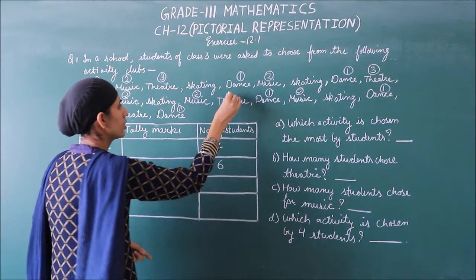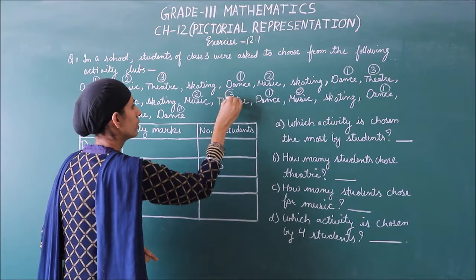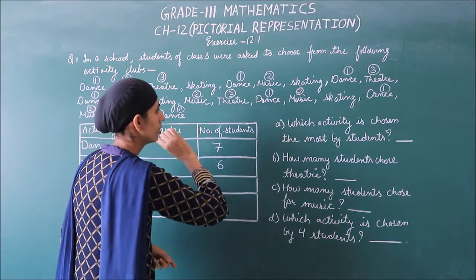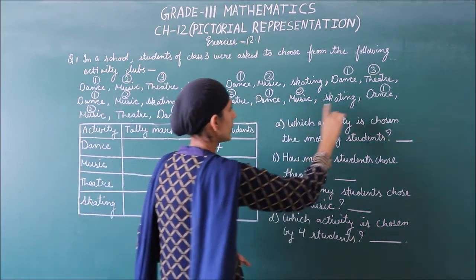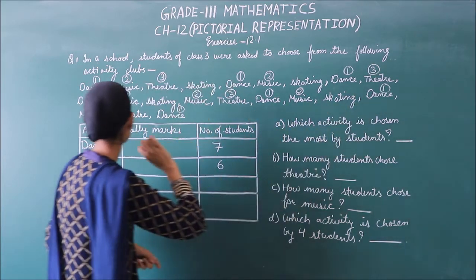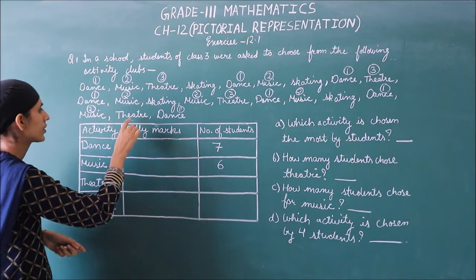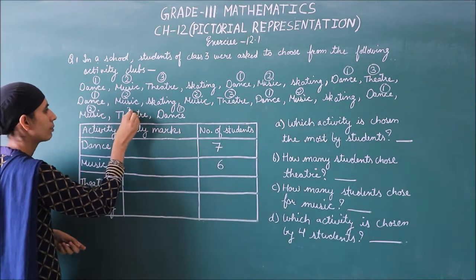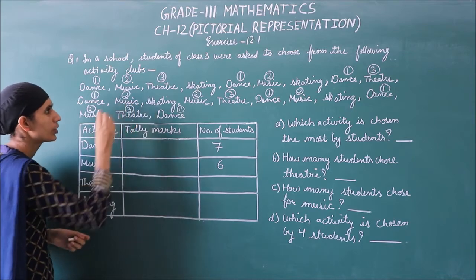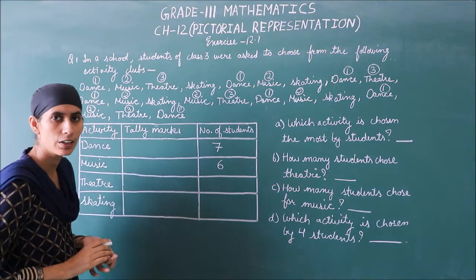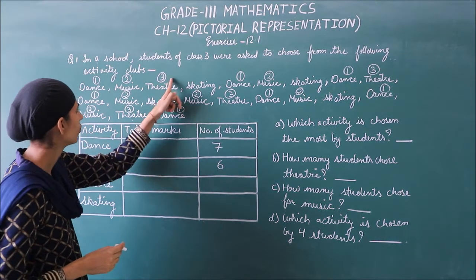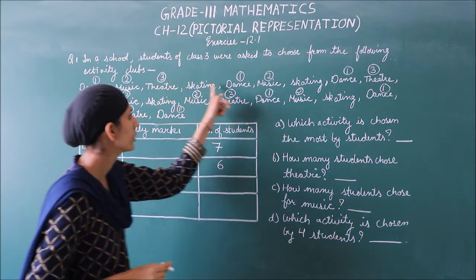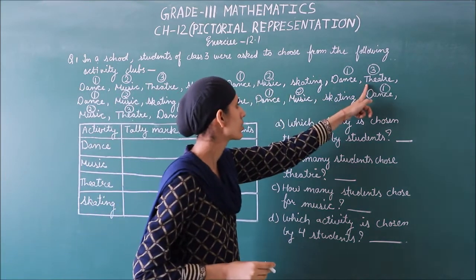Now using the same process we will count the remaining entries. In the last lines we count: one, next two, three...